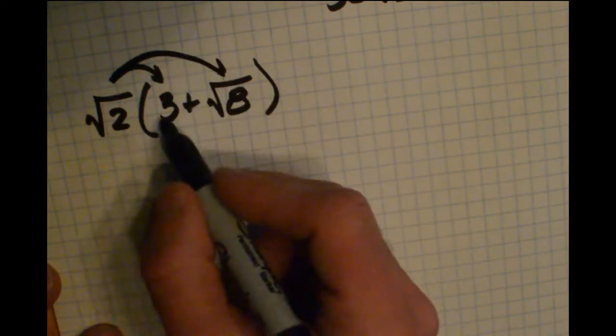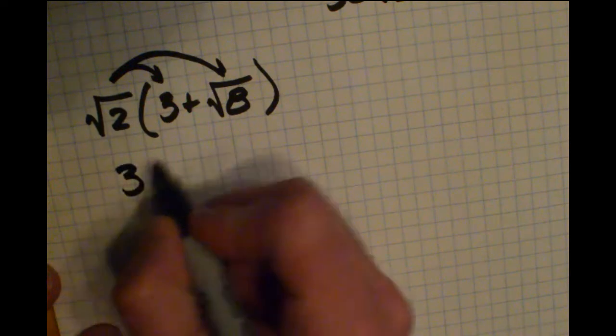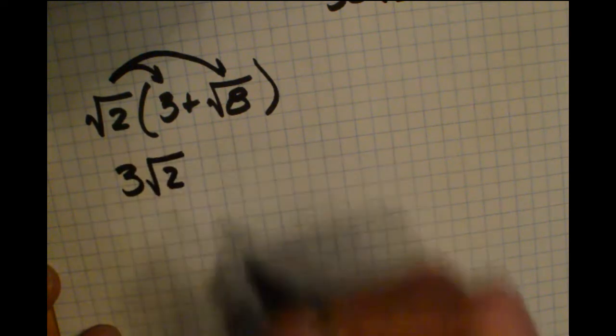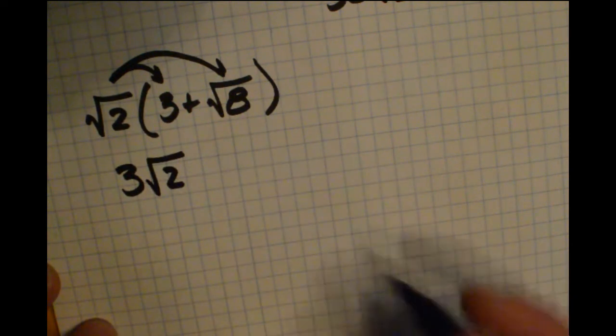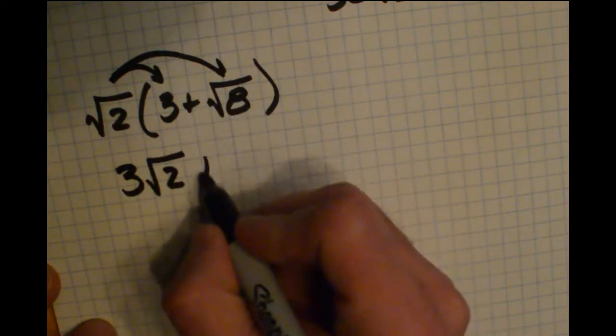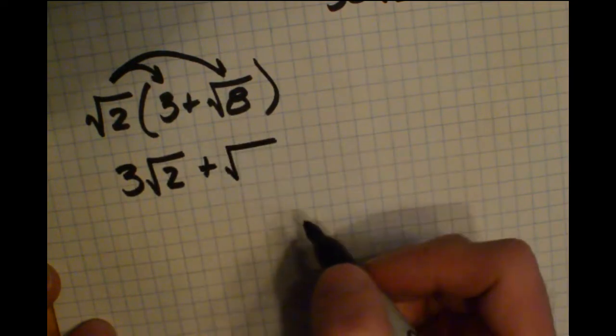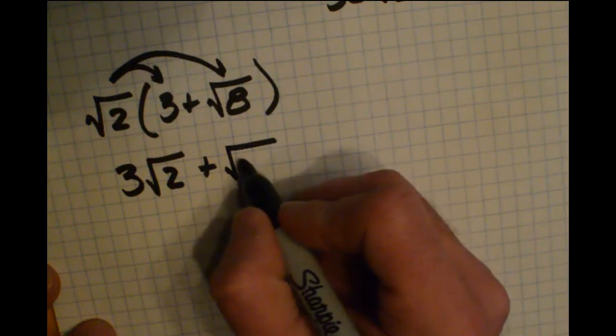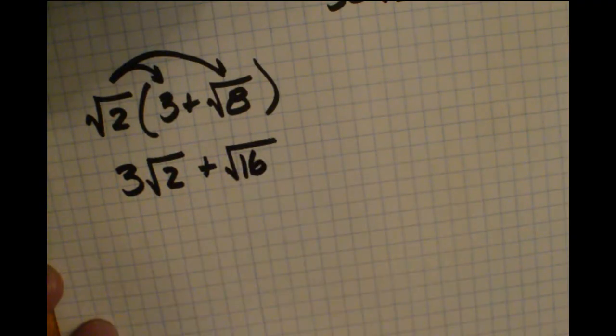When we take radical 2 times 3, the 3 is outside a radical and the 2 is inside, so they stay separate to get 3 radical 2. Radical 2 times radical 8, those are both inside the radical, so they multiply to become 16.